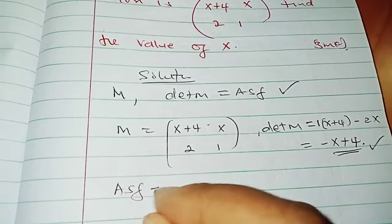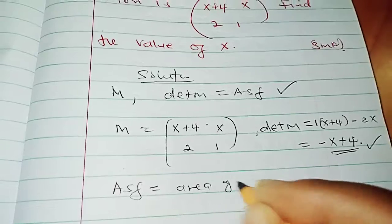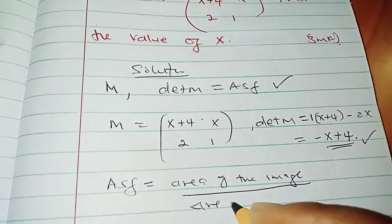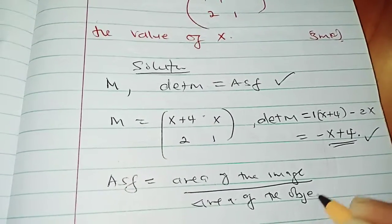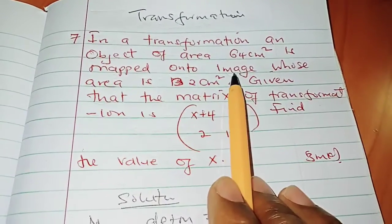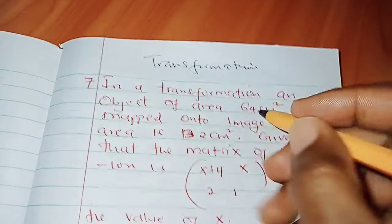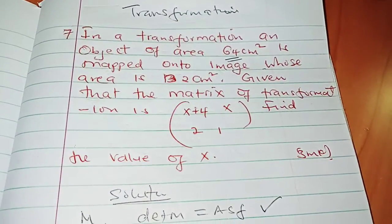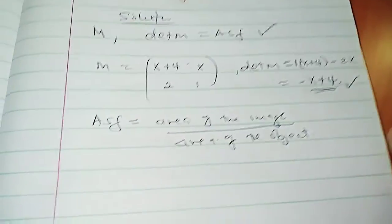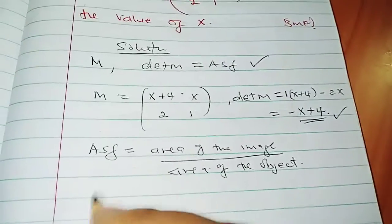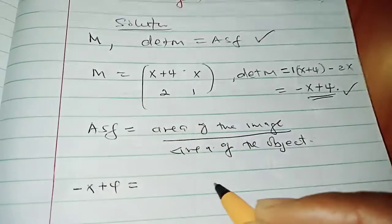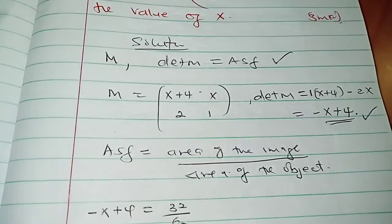We need to also get the area scale factor, which is the area of the image over area of the object. And you need to be careful because now here we are told that in a transformation, an object of area 64, so this is the area of the object and is mapped onto image whose area is 32. So don't confuse that. So we have determinant equals area scale factor. So we've got to write -x + 4 equals our area scale factor, which is 32 out of 64.